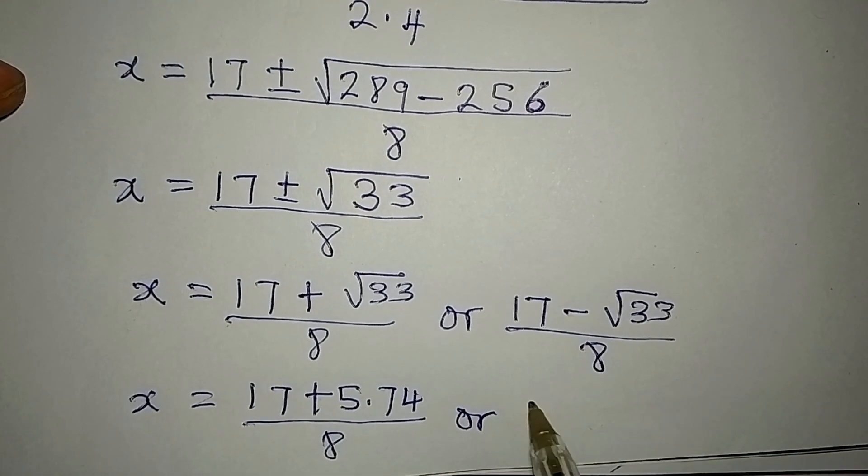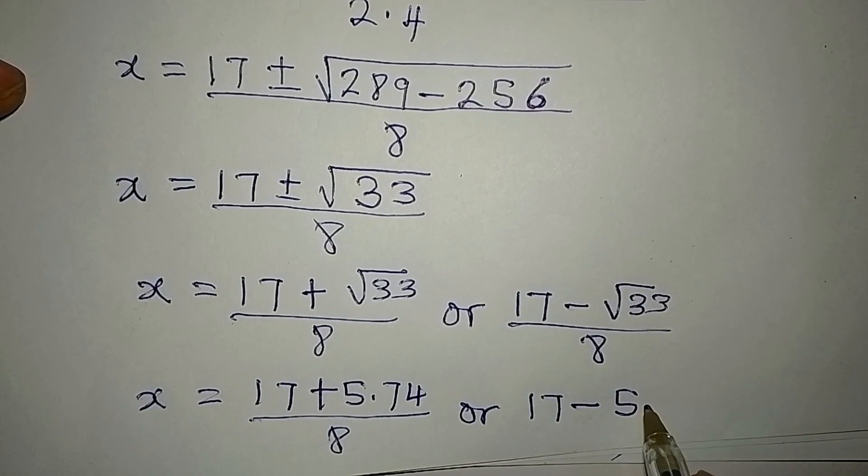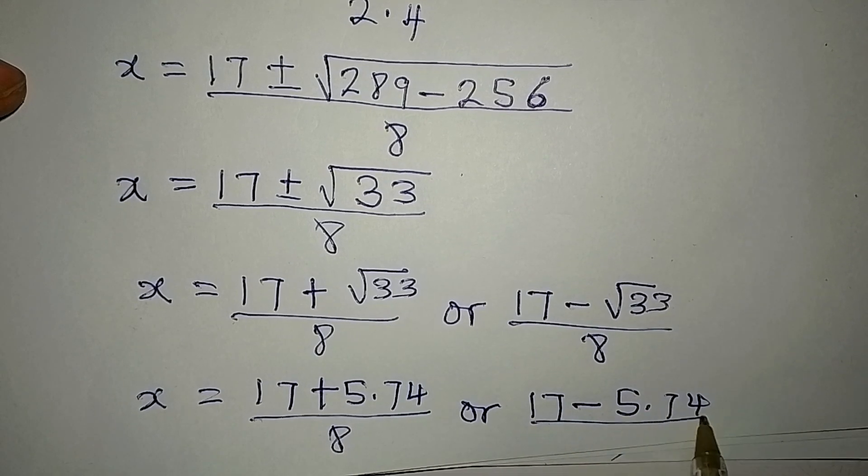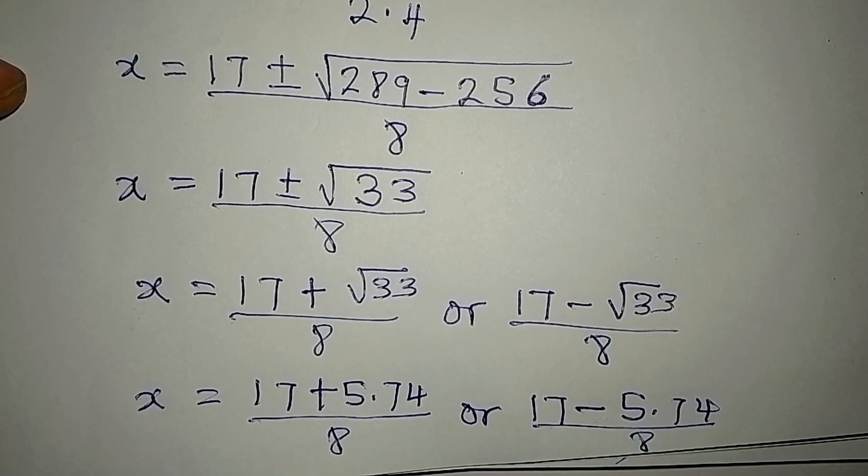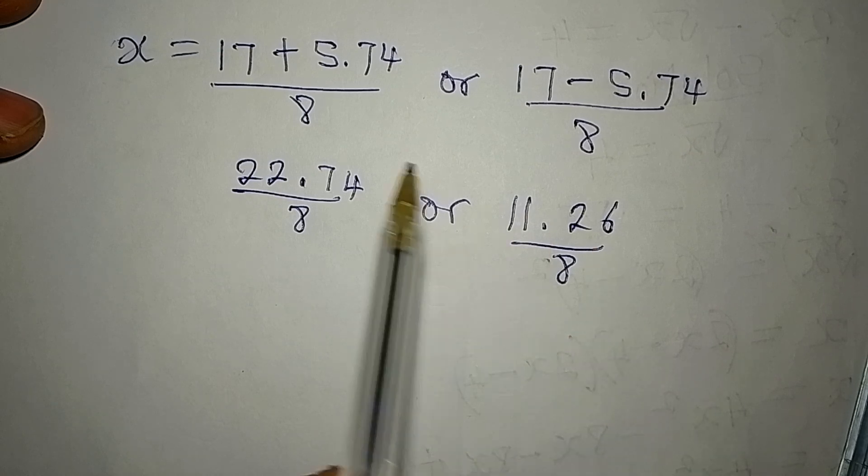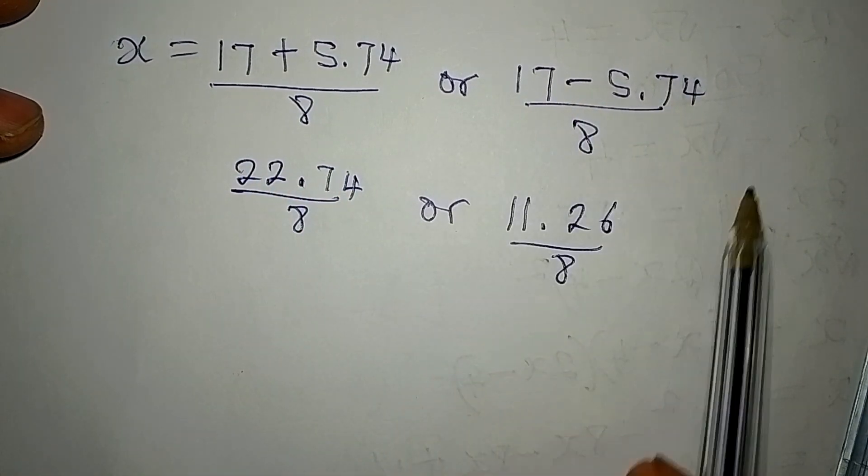Or, on this side, we have 17 minus 5.74. Then, whatever we have, we divide by 8. When you add this, you're going to get this. Subtract this, and you will have this.